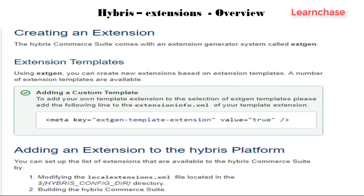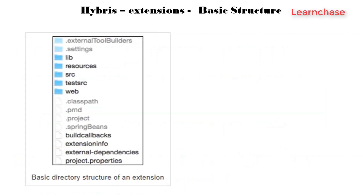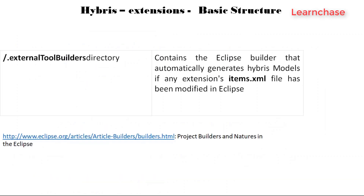To create a new extension, you use the extension command — extigen. You can also do this by setting the ANT environment. Using the extigen command, you pick a template and create your own customized extension. The basic directory structure of an extension includes external tool builders, settings, libraries, resources, source folders, and associated files.